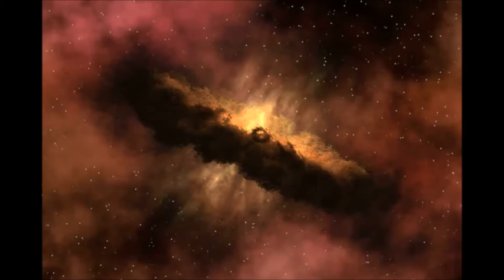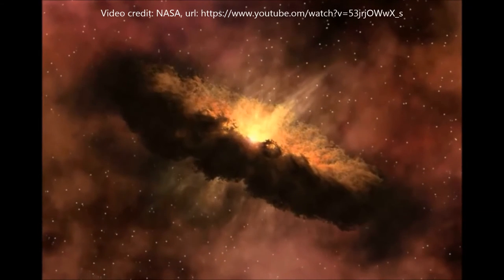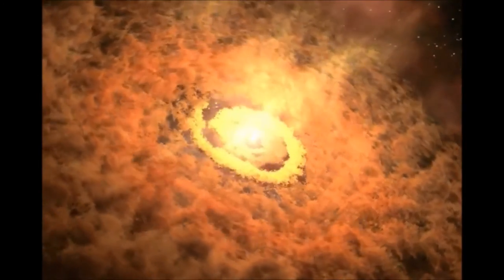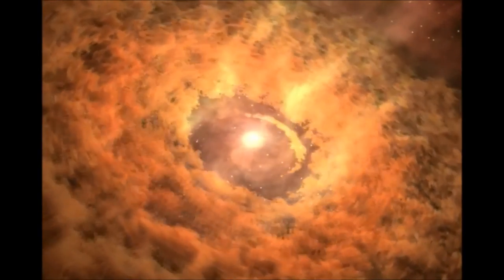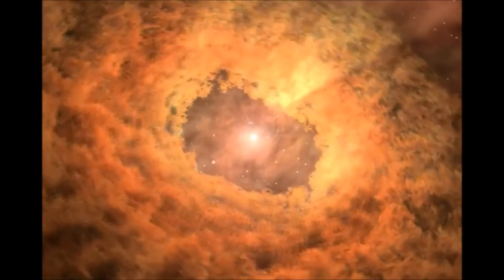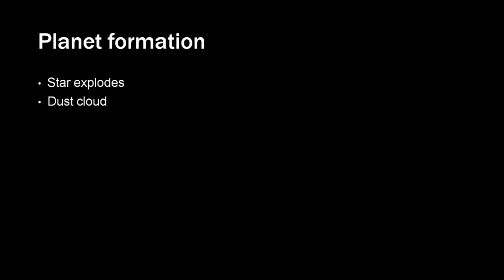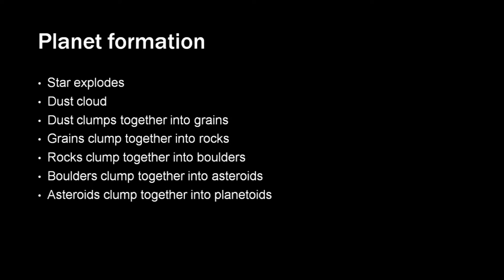Planet formation. We have never seen a planet forming. It supposedly takes too long so we couldn't observe it in a lifetime anyway. So all we have to base our ideas on is a theory and simulations. This is an animation of a planet forming. It assumes that planets form from dust clouds after a star has exploded. The path is from dust clouds into grains, grains into rocks, rocks into boulders, boulders into asteroids, asteroids into planetoids, and then planetoids into planets. Supposedly, gravity pulls smaller objects into larger objects.